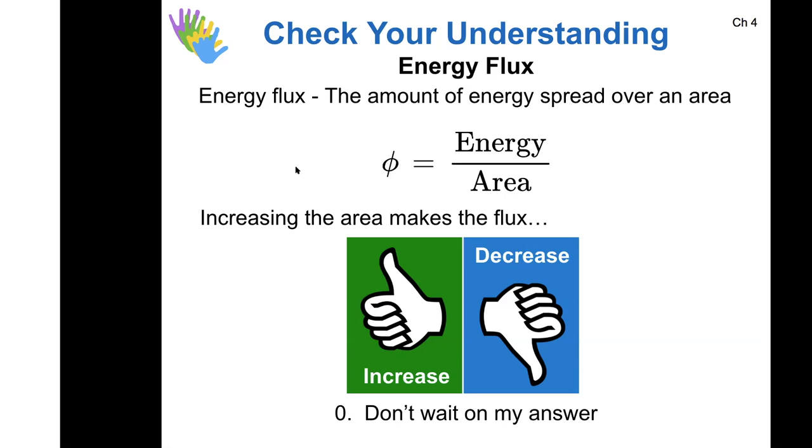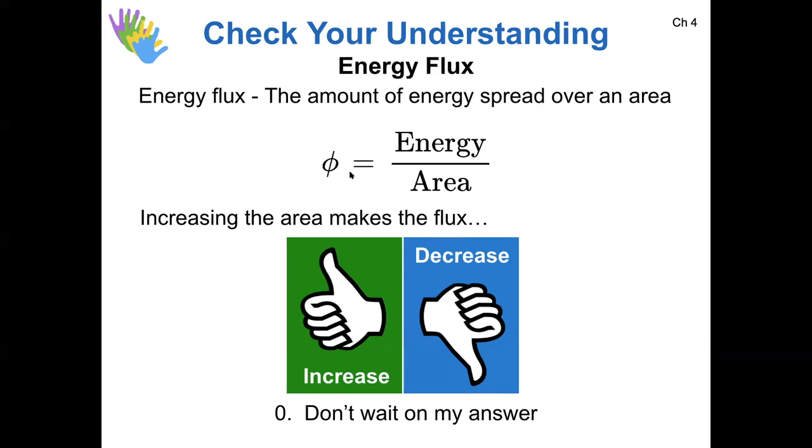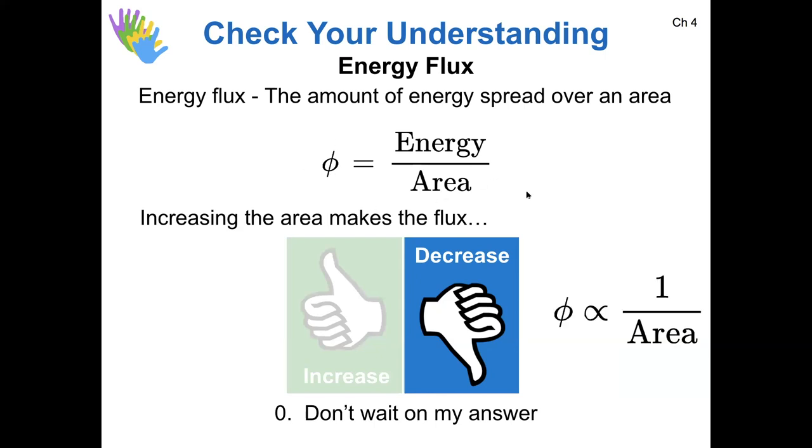I'm seeing most votes for option number two, that if we increase the area that the flux is going to decrease, and that's exactly right. So if we look at the proportionality relationship here, the flux is inversely proportional to the area. So as the area goes up, then that means that the flux goes down. If I go one over 100, that's a smaller number than one over two or something. So larger area means a smaller energy flux.